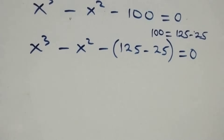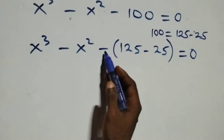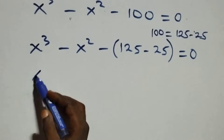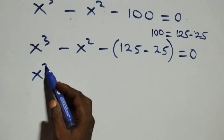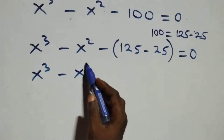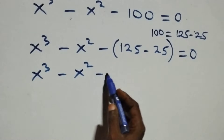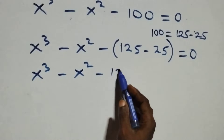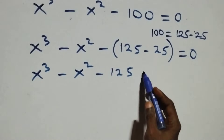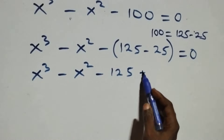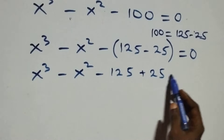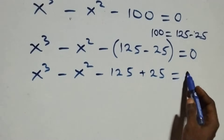And here, we open this bracket: minus distributes and we have x raised to the power 3 minus x raised to the power 2, then minus 125, then minus negative 25 — that's plus — so we have plus 25, which equals to 0.